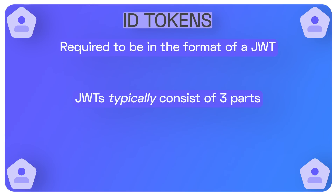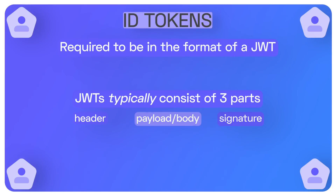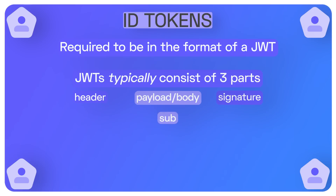JWTs typically consist of three parts: the header, the payload or body, and the signature. If you ever have a JSON web token and want to see the information inside of it, you can head over to JWT.io to decode that information. Inside the payload of a JSON web token, you'll have several different claims or pieces of information. You might have a sub property, which is a unique identifier for a user; an audience, which is the intended receiver of this ID token; the issuer, which is the identity provider who created the token; and the name or other pieces of information about the user.